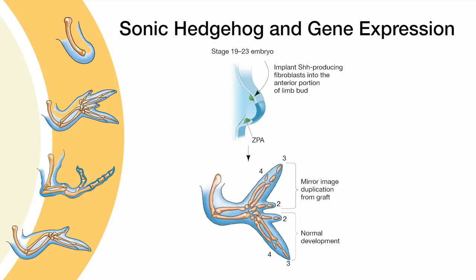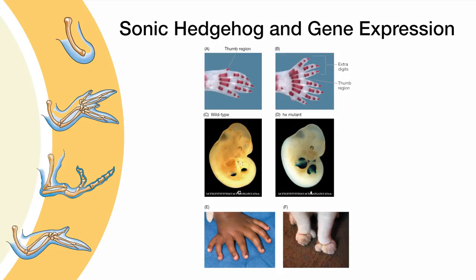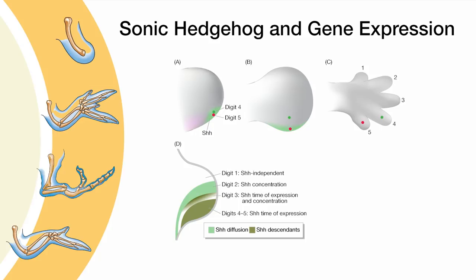Amazingly, natural mutations in a Sonic Hedgehog enhancer were found in mouse, cats, and humans that all caused the similar misexpression of Sonic Hedgehog on the anterior side of the limb bud. Consequently, these individuals show digit duplications. These results support the notion that Sonic Hedgehog is also functioning as a morphogen in the limb bud. Increasing the concentration of Sonic Hedgehog on the anterior side ends up inducing posterior digits with a gradation to the middle of the autopod, thus creating a mirror image duplication.